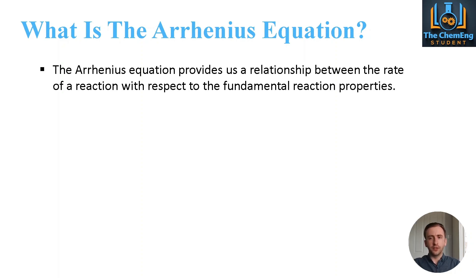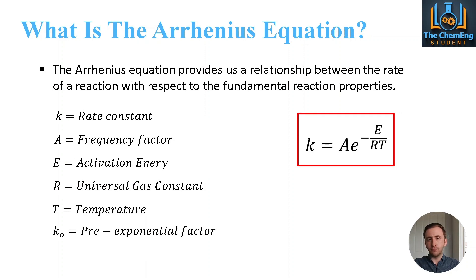So the first thing that we want to discuss is what the Arrhenius equation actually tells us. In simple terms, the Arrhenius equation provides us with a relationship between the reaction rate with respect to the temperature. And we can express the Arrhenius equation as follows: k equals A e to the power minus E over RT. Now the nomenclature is pretty much consistent with what you would have done in mass and energy balances and reactor design. We can see here that k is our rate constant, so that's what you would be more familiar with in reactor design.